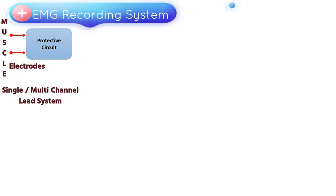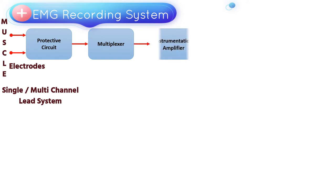Multiplexer. Since we have a greater number of electrodes and all the bioelectric signals generated have to be processed one by one, we use a multiplexer circuit to permit transfer of one signal from an electrode at a time.